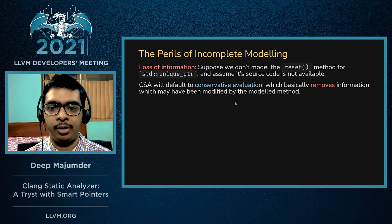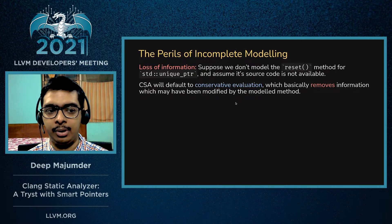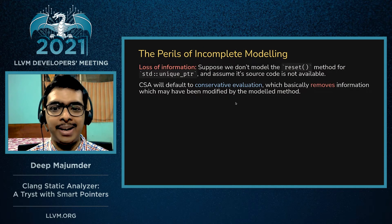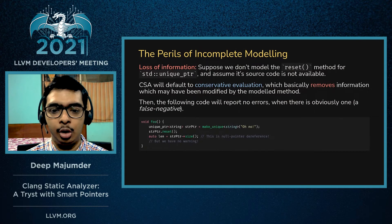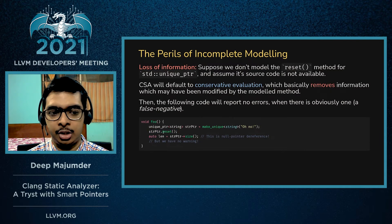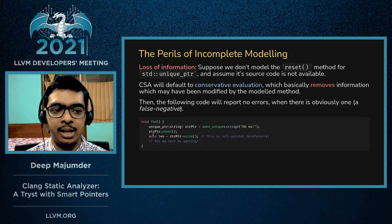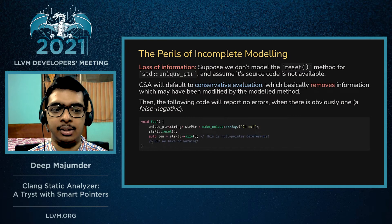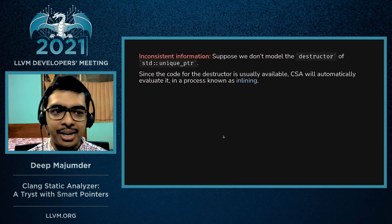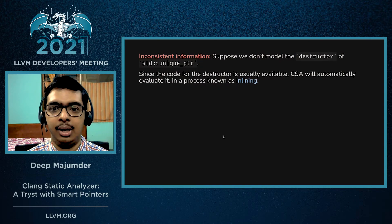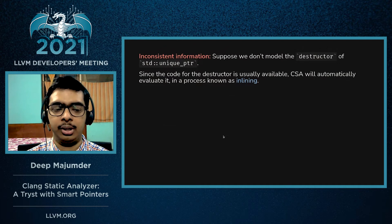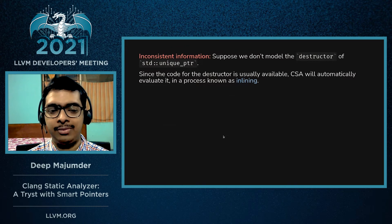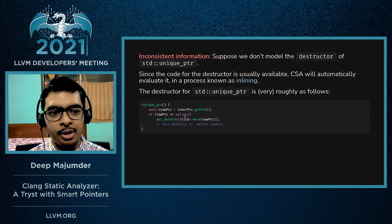What happens if we don't model all aspects of a class? First, we may have loss of information. Suppose we don't model the reset method and the source code isn't available. The CSA defaults to conservative evaluation, which removes information about values that may have been modified by the unmodeled method. So if we have a smart pointer and call reset, and reset hasn't been modeled, the CSA simply discards all information it had about ptr. It then has no way of telling whether the subsequent access is a null dereference — we know reset makes it null, but the CSA doesn't — resulting in a false negative.